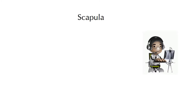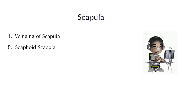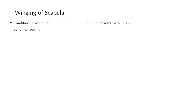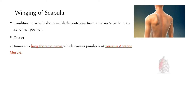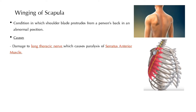We are going to discuss two clinical cases related to scapula: number one is winging of scapula and number two is scaphoid scapula. Winging of scapula is a condition in which the medial border of scapula protrudes from a person's back in an abnormal position. It is caused due to damage to the long thoracic nerve, which causes paralysis of the serratus anterior muscle.